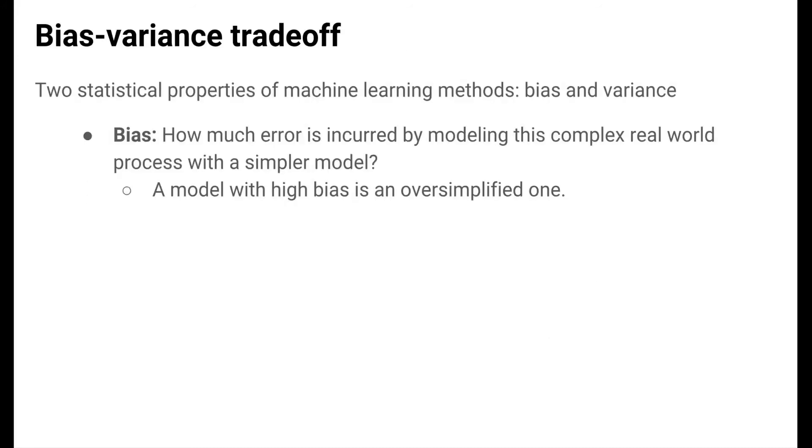The bias-variance tradeoff represents a tradeoff between two statistical properties of machine learning models, bias and variance. Bias is the answer to the question, how much error do we incur by modeling a complex real-world process with a model that is inherently a simplification? A model with high bias is an overly simple one. It has high bias because its simplified depiction of the response is off by a lot.